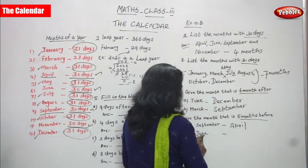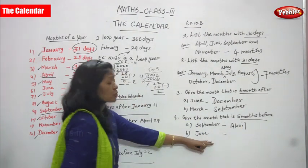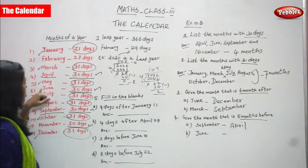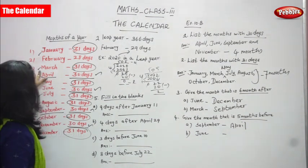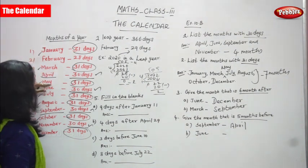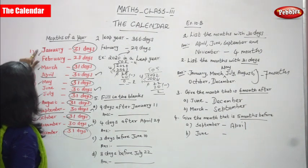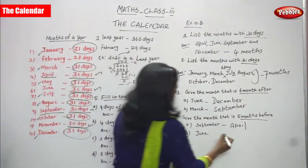Next: 5 months before June. You should not consider June. Count backwards: May, April, March, February, January — that is 5 months. So January is the right answer for 5 months before June.